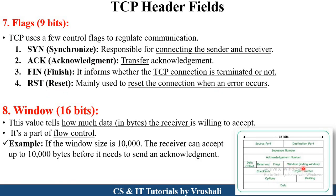The next field is the window field. As discussed earlier, TCP protocol uses the sliding window protocol to maintain the flow of communication. Consider that the receiver window size is 10,000 — so the sender sends only 10,000 bytes of data to the receiver, maintaining the flow by sending data as per the limitations of the receiver. This size is specified in the window field.